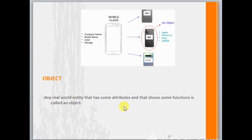Any real world entity which has some attributes and shows some function is called an object. For example, let us consider a mobile phone. A mobile phone has some characteristics like a display, a battery, many interfaces inside it. These are called the attributes.